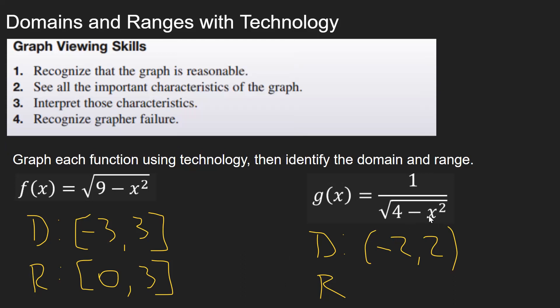The closer you get to two or negative two, the closer the denominator is going to end up being to zero. So when you divide one by a smaller and smaller decimal number, the answer is going to get bigger and bigger.